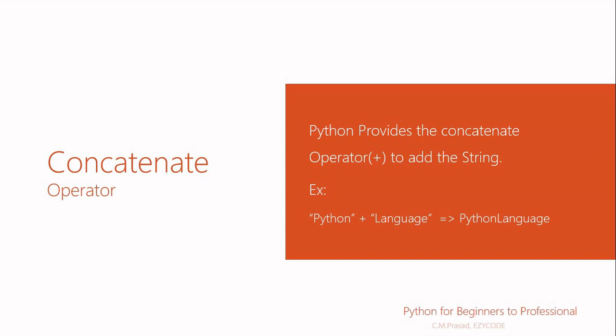In the last video we discussed about the print function, which is used for displaying a message on the screen. In this video we will cover the concatenation operator. The concatenation operator is used to put two or more strings side by side, and its symbol is the plus sign.